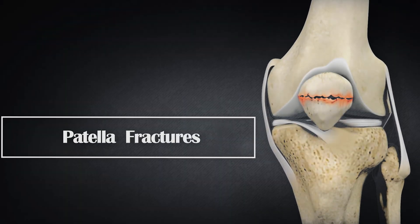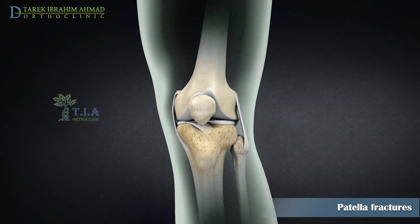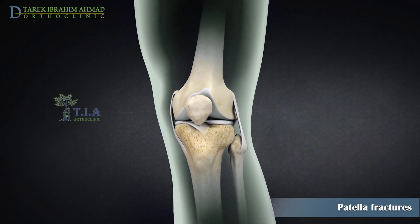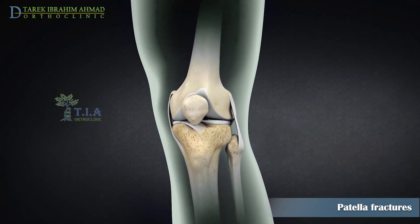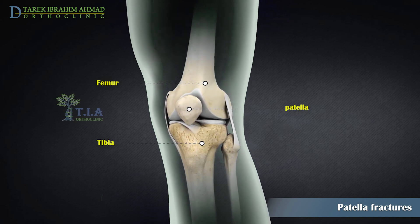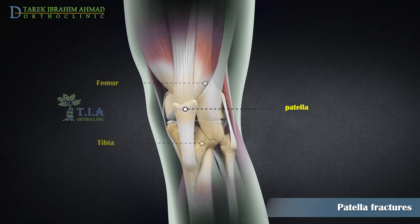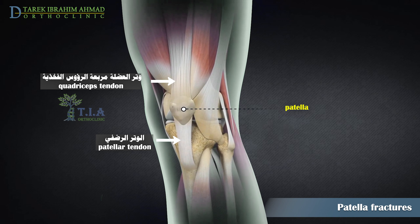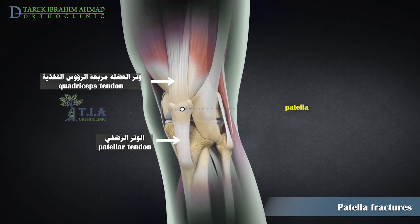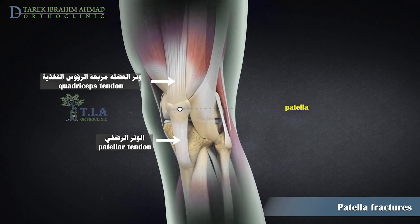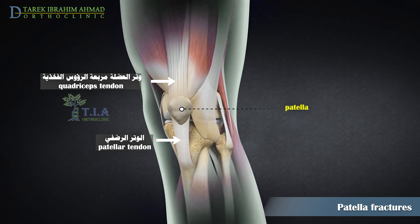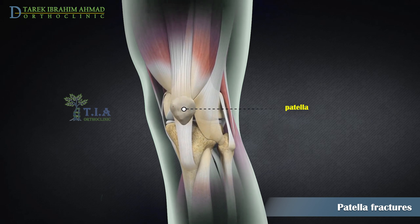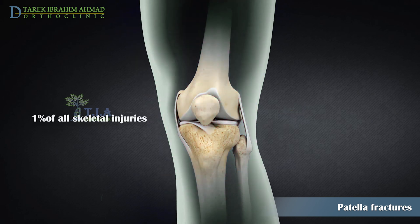Patella fractures in adults. The patella is the largest sesamoid bone that sits at the front of your knee and serves several important functions. It connects the muscles in the front of the thigh to the tibia. The quadriceps and patellar tendons attach to the patella, which normally allows you to flex and extend your knee. The patella also protects the knee joint from direct trauma. Patella fractures account for approximately one percent of all skeletal injuries in adults.